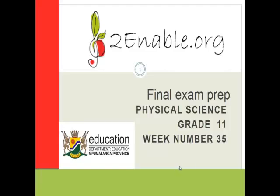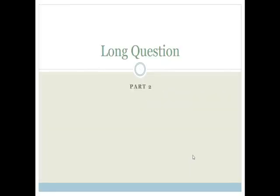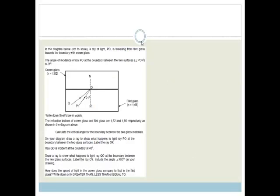Good day, grade 11. Welcome to this next lesson in week 35, where we prepare for your final exam by doing some physics questions. In the diagram below, not to scale, a ray of light PO is travelling from flint glass towards the boundary with crown glass. The angle of incidence of ray PO, that's this one here, is 21 degrees.